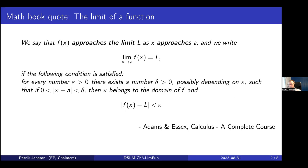As with the previous example, we start with a math book quote — the limit of a function — again from Adams and Essex. This is not supposed to be something new; it's just something you might remember from long ago. We try to tease this apart to see how we can type it, analyze it, and code up parts of it. The quote says we will say that f of x approaches the limit L as x approaches a, written as an expression, if the following condition is satisfied: for every number epsilon greater than zero, there exists a number delta greater than zero, possibly depending on epsilon, such that if x belongs to the domain of f, this condition holds.